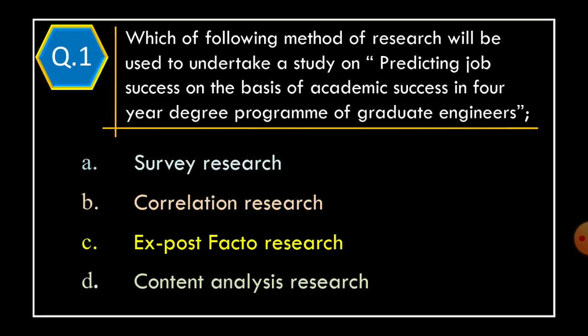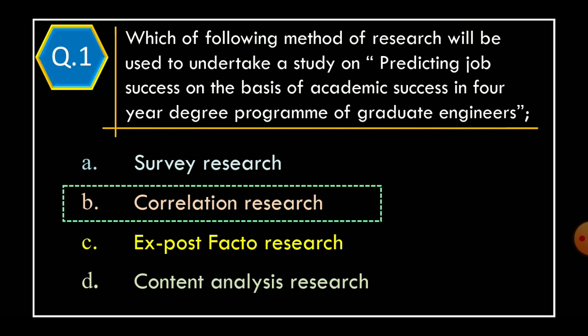Which of the following methods of research will be used to undertake a study on predicting job success on the basis of academic success in a four-year degree program of graduate engineers? Option A: Survey Research. Option B: Correlation Research. Option C: Ex Post Facto Research. Option D: Content Analysis Research. The correct option is Option B, Correlation Research.